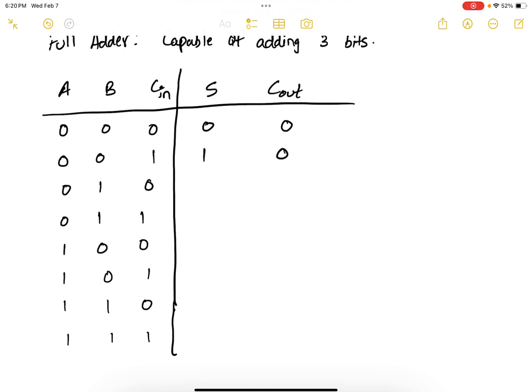When you add zero plus one plus zero, sum is one, carry is zero. When you add zero plus one plus one, that is two. So one plus one is zero, carry one.